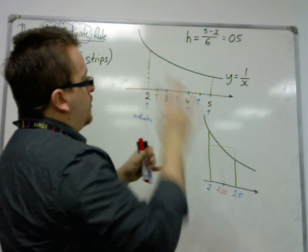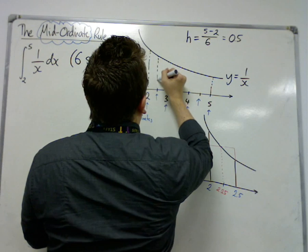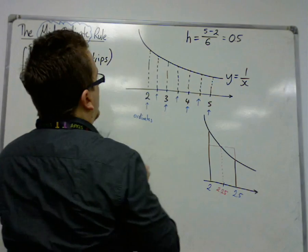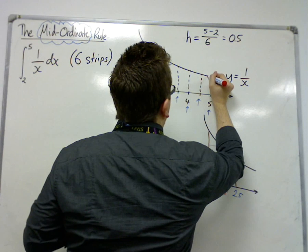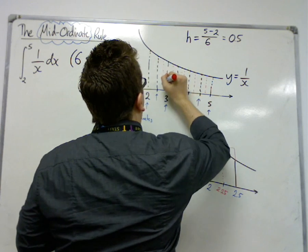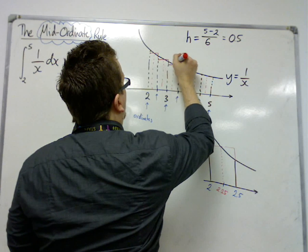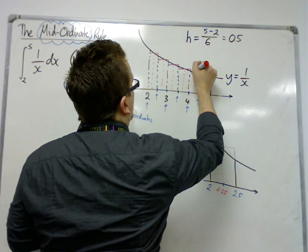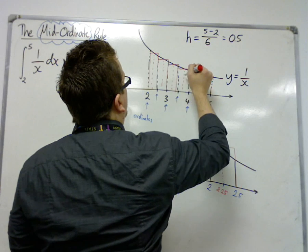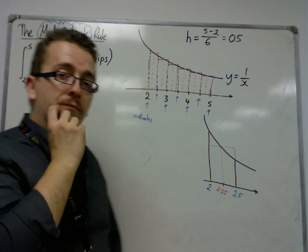So what we're doing is we're going to create these rectangles. If I draw in the dotted lines here, like so. They're your ordinates. These are your mid-ordinates, to create these rectangles which will estimate the area under the curve.